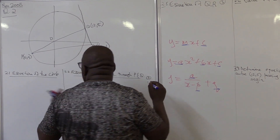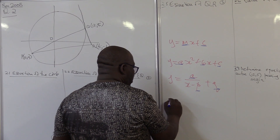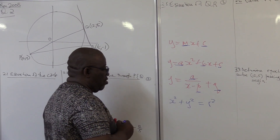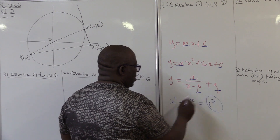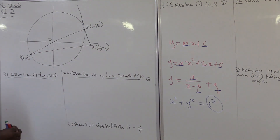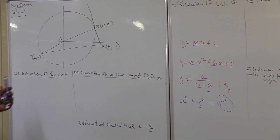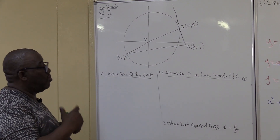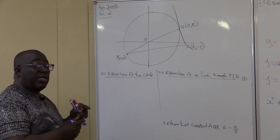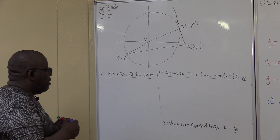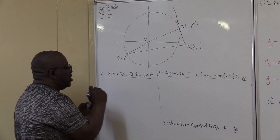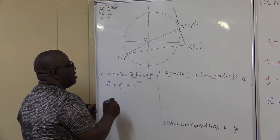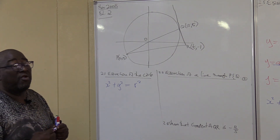Now let's look at the equation of a circle: x² + y² = r². What are we looking for? We are just looking for r squared. In this particular case, it's a circle with a center at the origin. If it was not at the origin, it would be (x − a)² + (y − b)². But here the coordinates of a and b are zero.